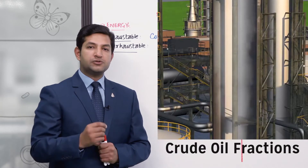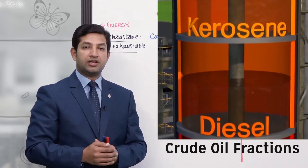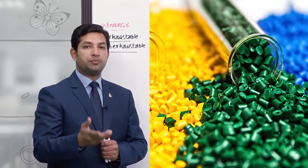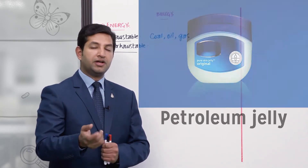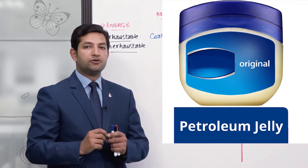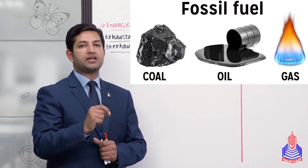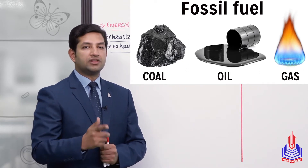Crude oil کو fractionation کے عمل سے مختلف categories میں تقسیم کیا جاتا ہے۔ موجودہ lifestyle میں plastic کی بہت اہمیت ہے جو petroleum product ہے۔ سڑکوں پر tar یا charcoal بھی petroleum product ہے، اسی طرح Vaseline اور petroleum jellies بھی petrochemicals کی products ہیں۔ اگر یہ fossil fuels ختم ہوئے تو بہت ساری چیزیں synthetically بنانا پڑ سکتی ہیں۔